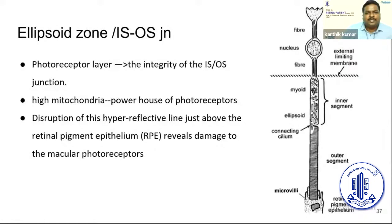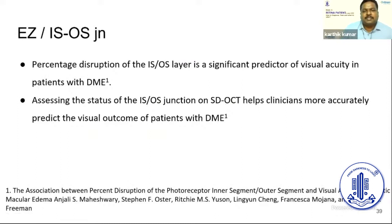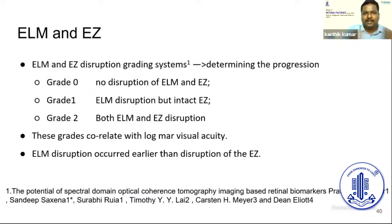The IS/OS junction — also known as the ellipsoid zone or cost line — represents the photoreceptor layer. Any disruption of this layer is more damaging, and the percentage disruption is a significant predictor of visual acuity in DME. The ELM and ellipsoid zone are closely related: when one is disrupted, the other is likely to follow, with the ELM typically disrupted before the ellipsoid zone.